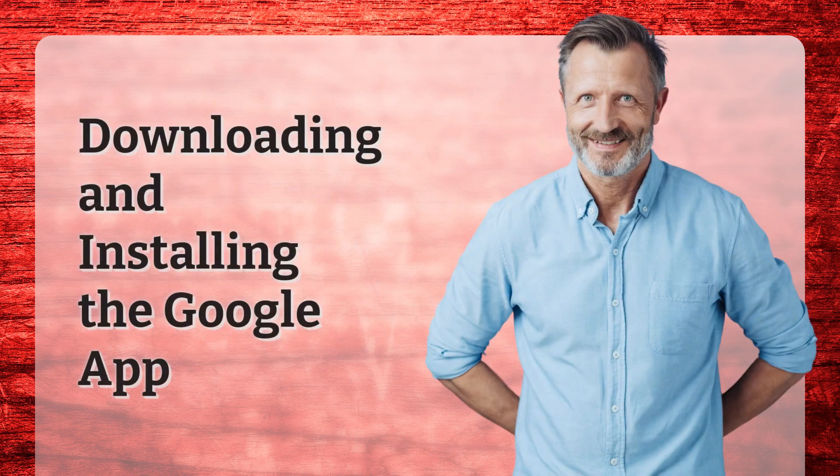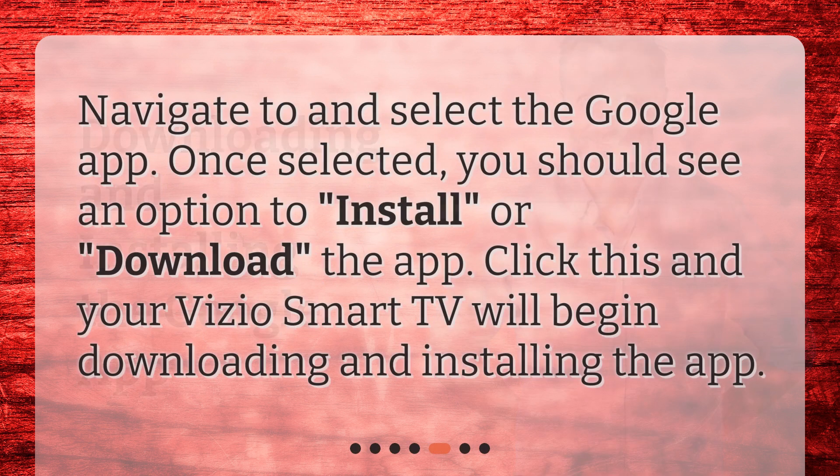Downloading and installing the Google app. Navigate to and select the Google app. Once selected, you should see an option to install or download the app. Click this and your Vizio Smart TV will begin downloading and installing the app.